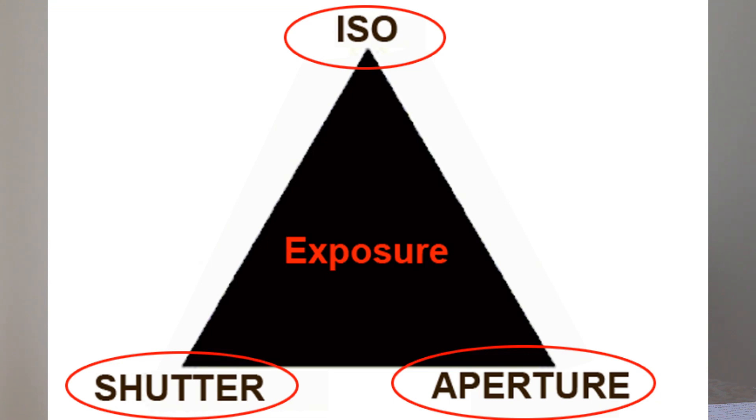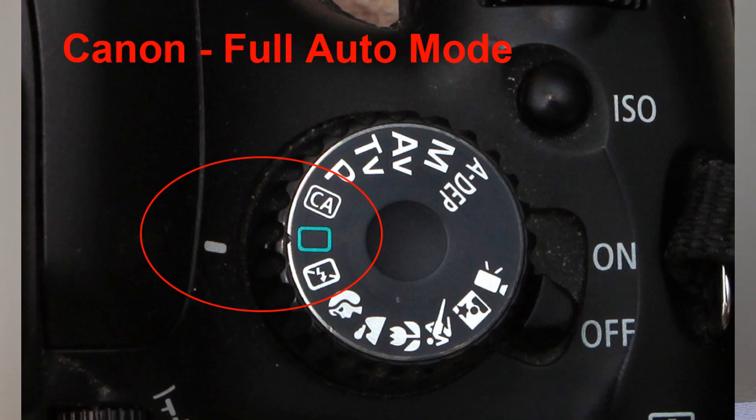Now our cameras will set all three of these for us if we so desire — that's called full auto; the camera makes all of the decisions. We can also ask the camera to just adjust one or two of those functions and leave the rest to us. Let's call these settings semi-automatic, as we're having the camera make the final calculations for exposure but giving us some control. These semi-automatic settings are a great way to learn the effects of the different functions on your image.